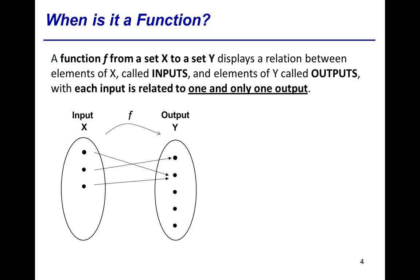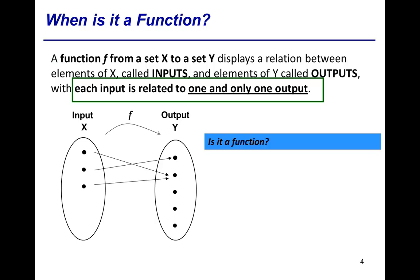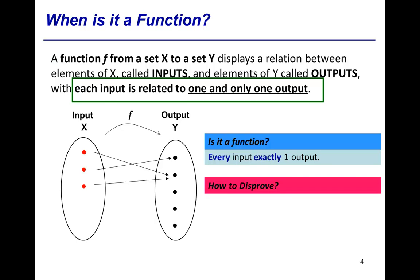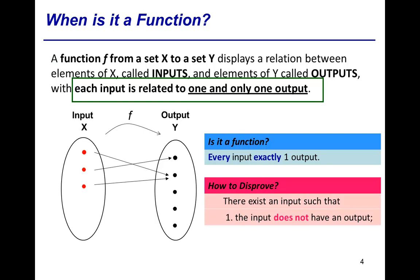The keyword in this definition is: each input is related to one and only one output. To qualify as a function, we need to check that each and every input must have exactly one output — one arrow pointing out of it. To disprove that a relation is a function, we need to find a counter-example: either an input that does not have an output at all,